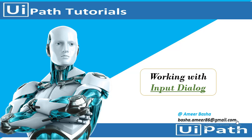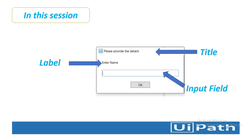In this session we are going to learn about Input Dialog in detail. Input Dialog displays a dialog box to the user that prompts with a title, a label, and an input field. On screen you can see how it looks: the topmost is the title, 'Enter Name' is the label, and the user provides input in the input field, then clicks OK.